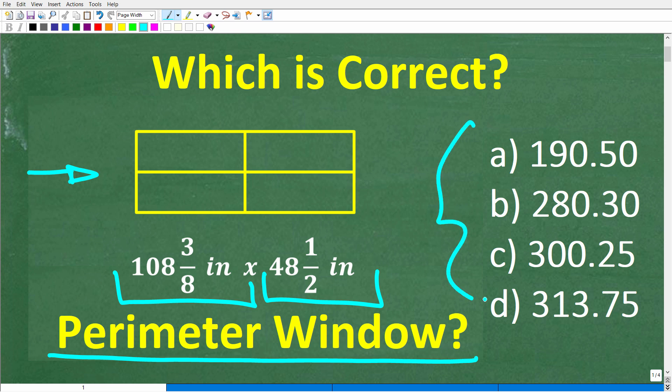Now we do have a multiple choice question here, and all these numbers are in inches. So A is 190.50, B is 280.30, C is 300.25, and D is 313.75 inches.